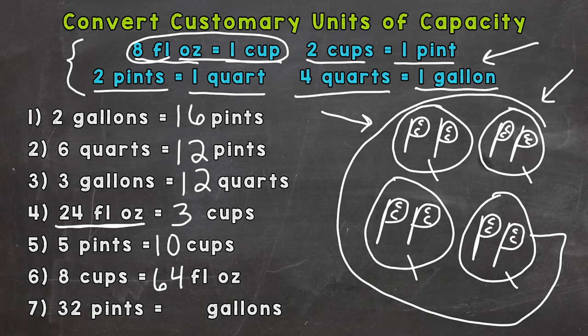Number seven: 32 pints equals how many gallons. There are eight pints in one gallon, so we need to split this 32 pints into groups of eight. Each one of those groups of eight is one gallon, so we need to do 32 divided by eight, which gives us four gallons.